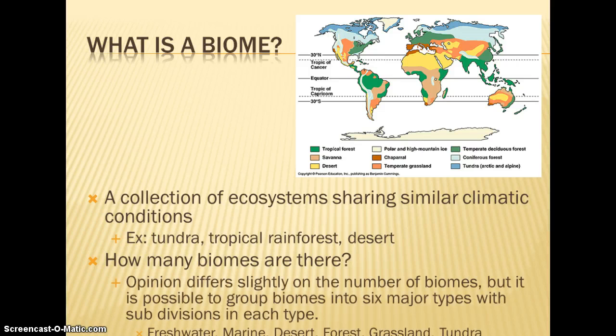How many biomes are there? It depends on the classification system you're using. There are six major types. Freshwater and marine are two types of aquatic biomes — freshwater is fresh water, marine is saltwater. Then we have deserts, forests, grasslands, and tundra. Tundra can almost fall into the desert category because it's basically a cold desert — it doesn't get very much rainfall and there's not a lot of vegetation.